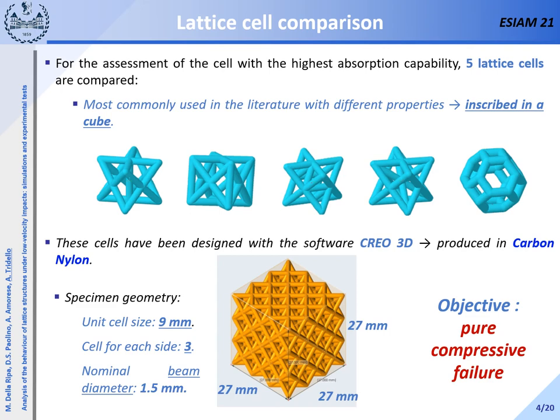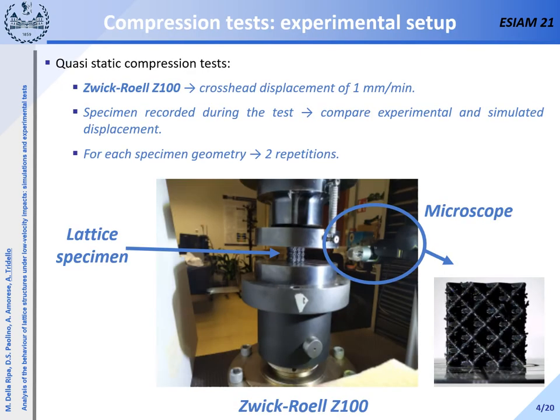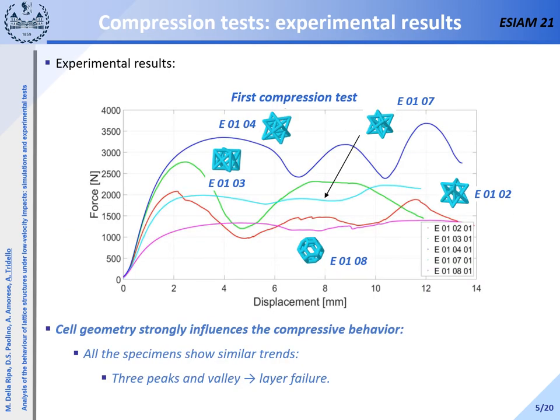More details on the specimens can be found in this slide. The compression tests were carried out with a standard tensile testing machine by imposing a cross-head displacement of 1 mm per minute. The specimen was also recorded during the test using a digitalized microscope in order to verify the failure mode. For each specimen geometry, two repetitions were considered. The acquired force-displacement response obtained by testing each specimen geometry is plotted in this slide; the first test is shown since the scatter between the two tests was not large and the trend was the same.